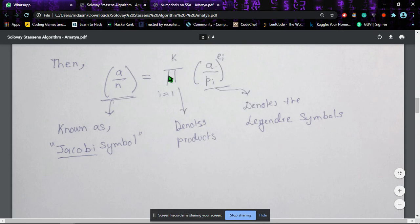Now what we can say is that a/n, the fraction a by n, is equal to the product from i equals 1 to k of a upon p_i raised to e_i.